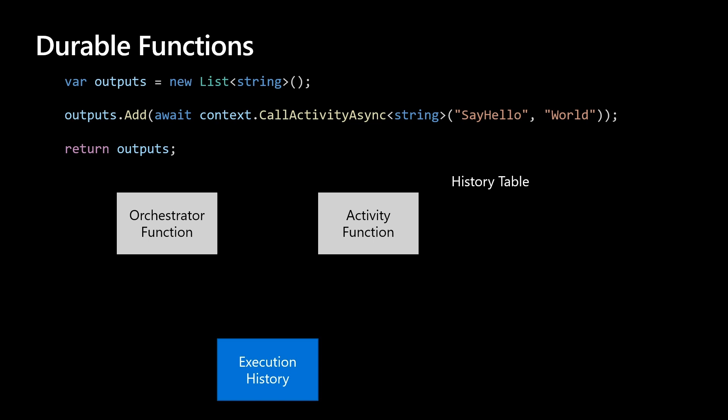Those activities are part of an execution history that is event-sourced. We're never going to run an activity twice — we'll store its result and return that result when the orchestrator replays. So why does it matter? Because we've been building serverless applications as stateless. This is stateful. We know where we are in our execution steps and we don't need to save the result ourselves to prevent calling a service twice. The framework does it for us.